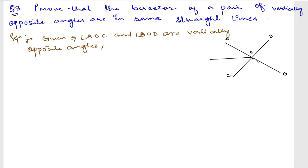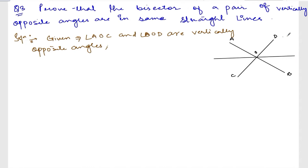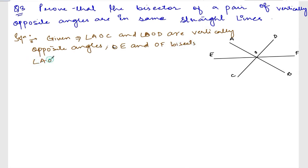Let me bisect this one — this is the bisector, meaning I am cutting it into half. So these are the bisectors on both sides. Let me name them E and F. So OE and OF are bisectors of angle AOC and angle DOB respectively.